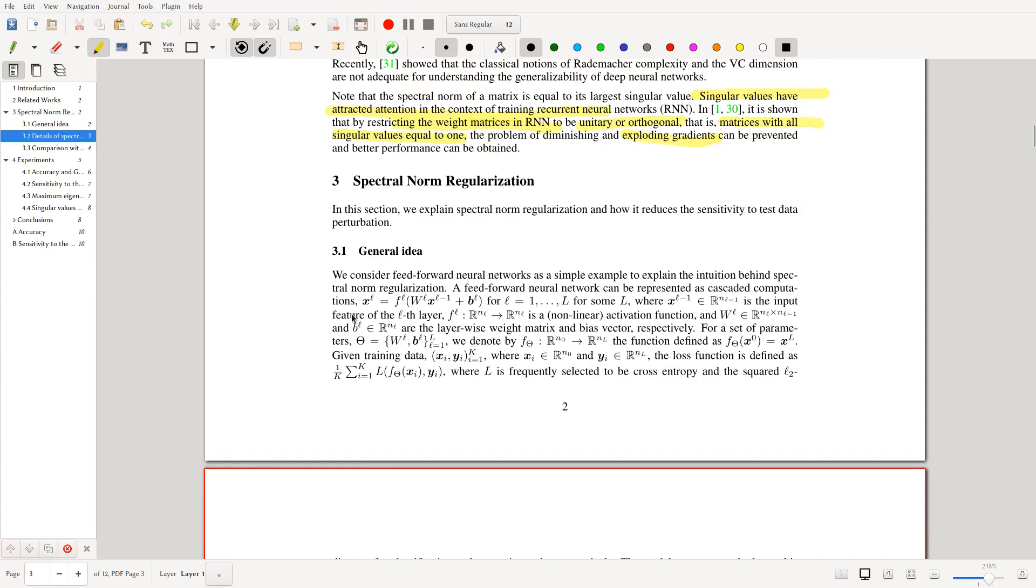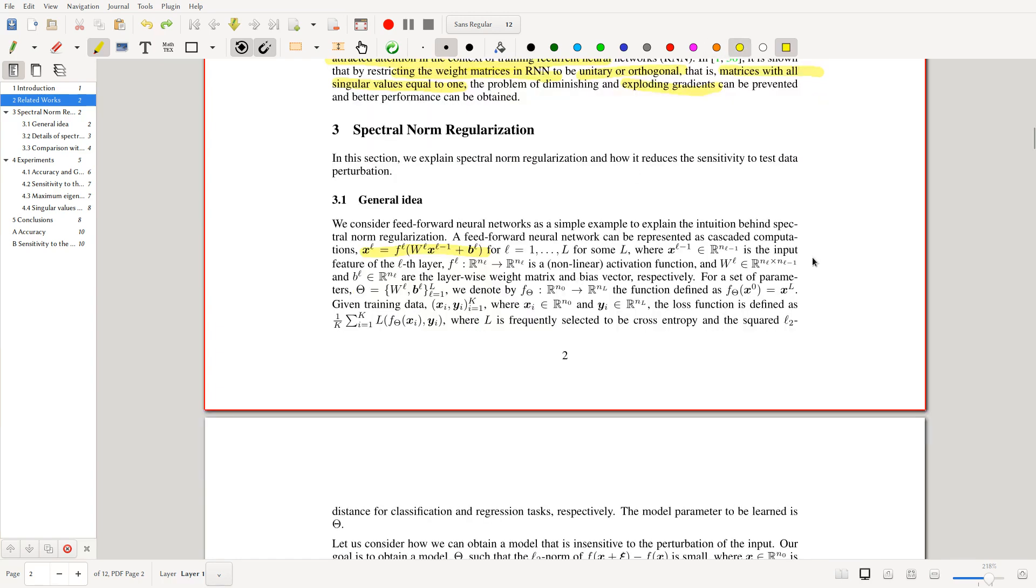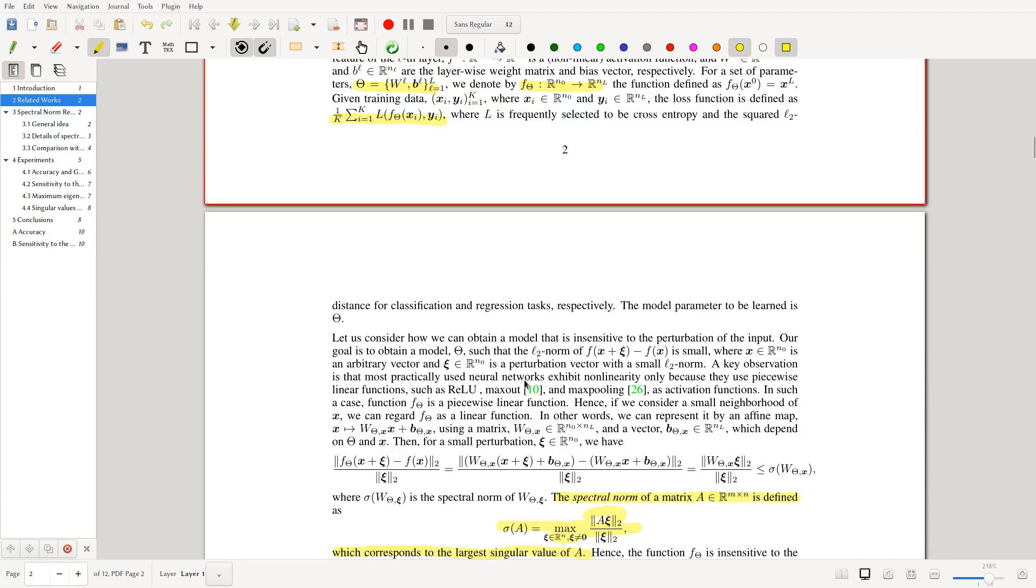So a feed-forward neural network can be represented as cascading computations, which we are all quite familiar with. Here they take a defined transformation and then we put it through F, which is an activation function here. And so on. Here they're just defining some stuff like theta, which is the parameters. And F theta is a function from N0 to NL, so it's like the class of the final network, right? And then we look at the loss function here. Pretty standard stuff.